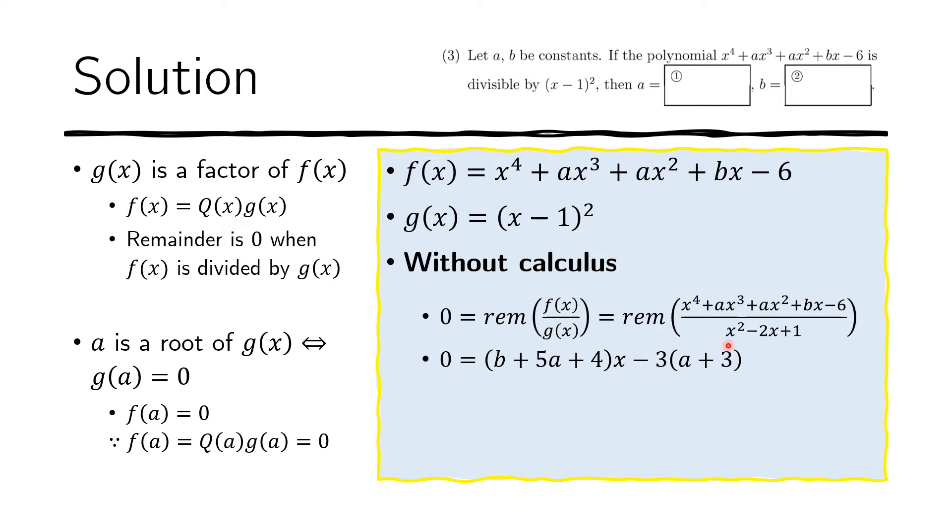So if we compare the coefficients, the coefficient here for the constant term is this, and the coefficient here for the constant term is zero. Now here, the coefficient for the x term is this, and here the coefficient of the x term is again zero. So basically on the left side, we have zero x plus zero. And now that gives us two equations. This equals zero and this equals zero.